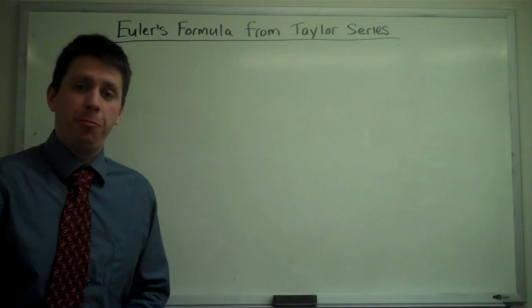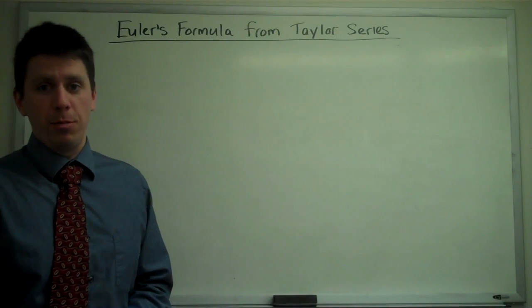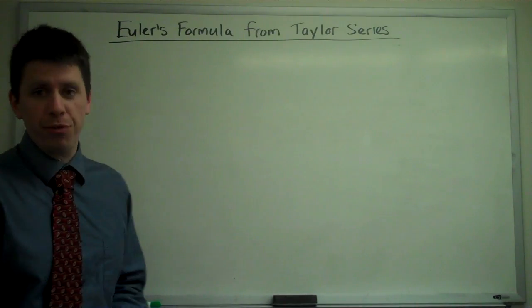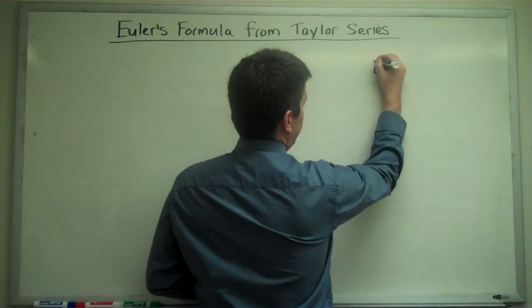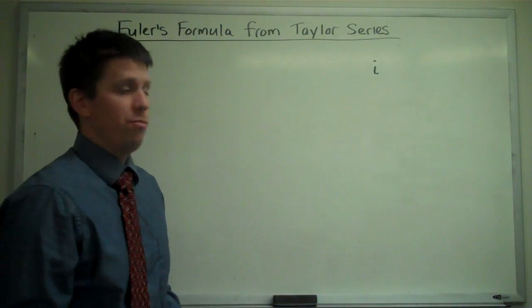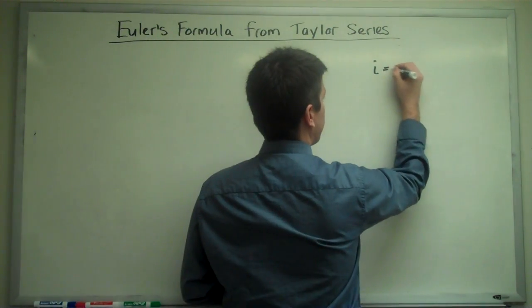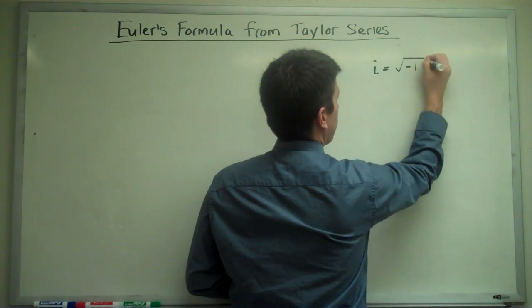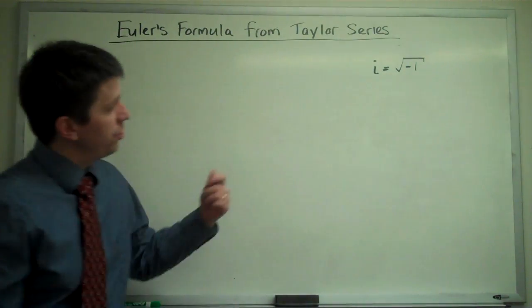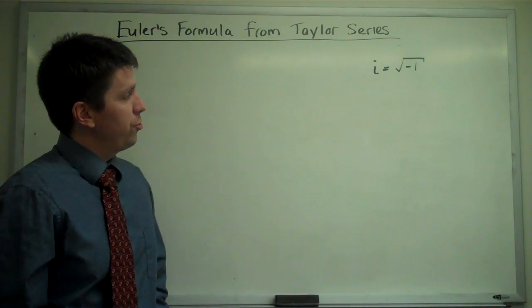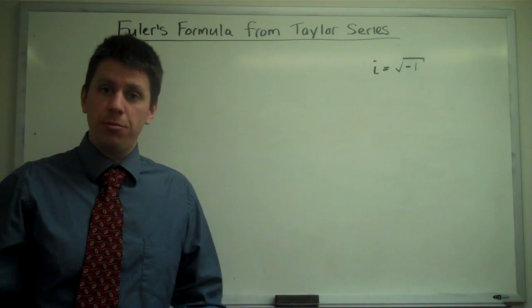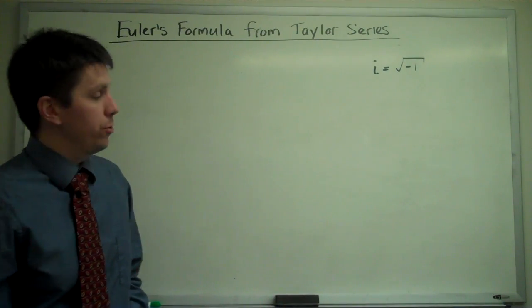Some of you will not really even know too much about what complex numbers are, so we'll talk very briefly about those. We have this number i, and how is it defined? It's defined to be the square root of minus 1. The introduction of this number i, which is called the imaginary number, allows us to solve many kinds of algebraic problems that we couldn't solve with just real numbers.